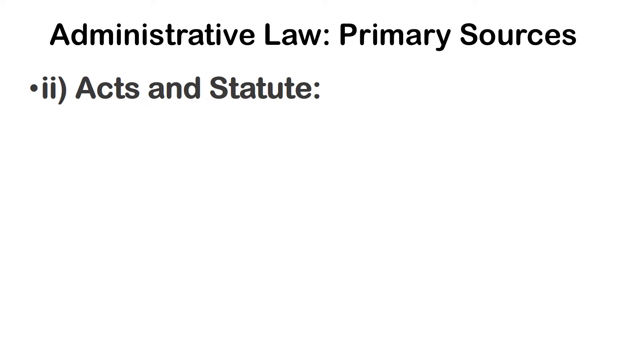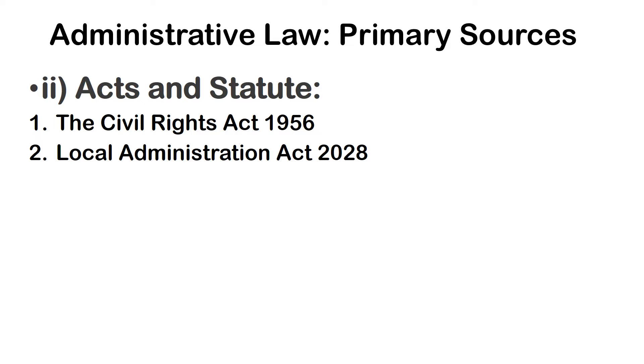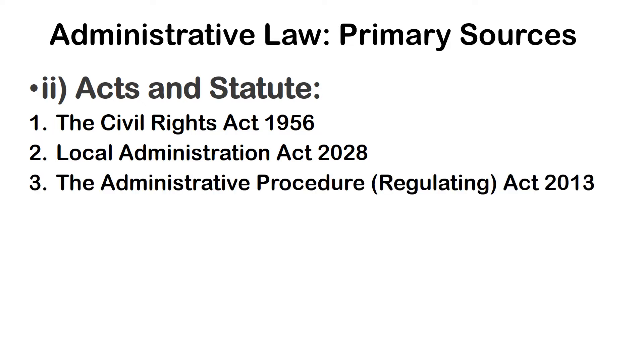Acts and Statutes. An act is a written law, and a statute is an act of the legislature. It is formally ordained or passed by the legislative power of a state. Acts and statutes passed by the legislature are important sources of administrative law because they elaborately detail the powers, functions, and modes of control of several administrative bodies. The French administrative law is entirely statutory, and administrative law of England is almost like legislation enacted by Parliament. The Civil Rights Act 1956, Local Administration Act 2028, the Administrative Procedure Regulating Act 2013, and the CIAA Act 2048 are some important sources of administrative law.